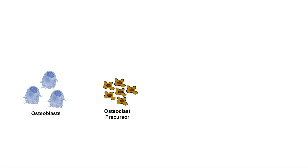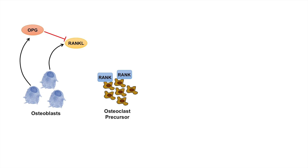Here is a brief diagram with osteoblasts and osteoclast precursors. The osteoclast precursors have the RANK receptor on their cell membrane. The osteoblasts themselves express and release RANKL protein, and also express and release OPG, which binds to and inhibits RANKL as a negative regulator. Also noteworthy is that estrogens like estradiol can act on osteoblasts to limit the release of RANKL. This becomes important during menopause with regards to osteoporosis, which we'll discuss in another lesson.